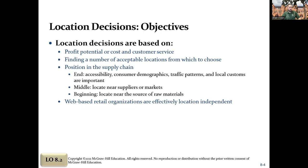You base your decisions typically on potential profits or costs associated with the decision and also customer service factors. Your position in the supply chain will have a determination. If you're at the end of the supply chain, like a retail store, you're going to want to locate in a good location in town. A lot of restaurants end up in the same area — shopping malls have strip malls nearby — so accessibility, customer demographics, and traffic issues all matter.